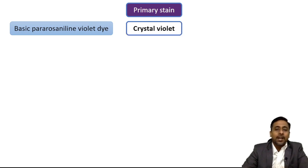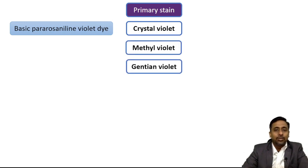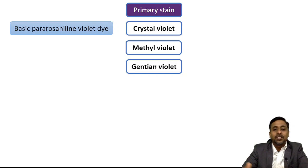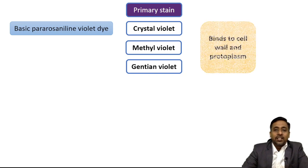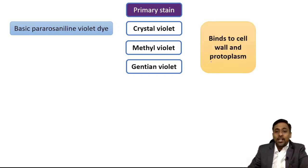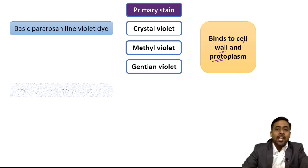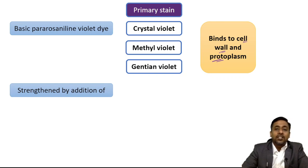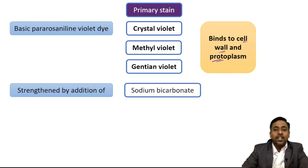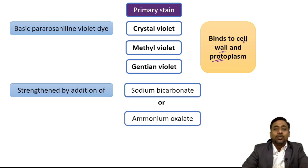Apart from crystal violet, methyl violet or gentian violet can also be used — all three names are now commonly used interchangeably. When staining, crystal violet binds to the cell wall and the protoplasm, that is the cytoplasm of the cell. Remember it binds to both the cell wall and the cytoplasm. It can be further enhanced by addition of certain chemicals such as sodium bicarbonate or ammonium oxalate.